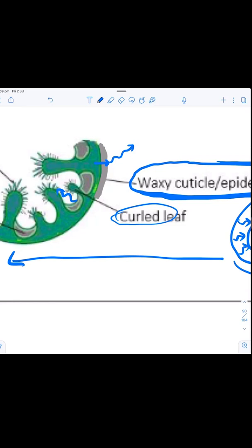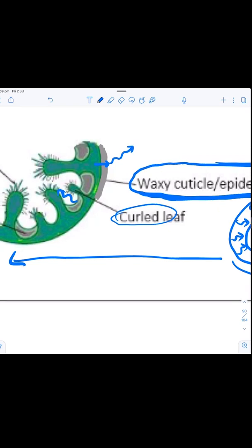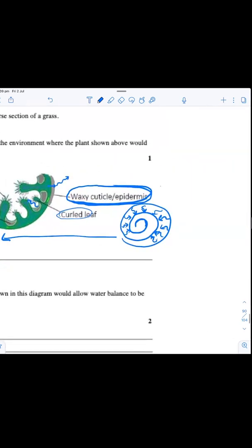Before it can evaporate, that's going to slow down the rate of transpiration. So that affects the thickness of the leaf, which is going to slow the rate of transpiration.